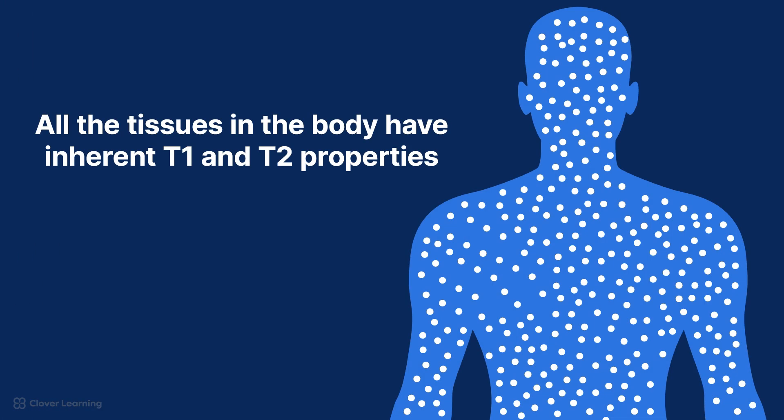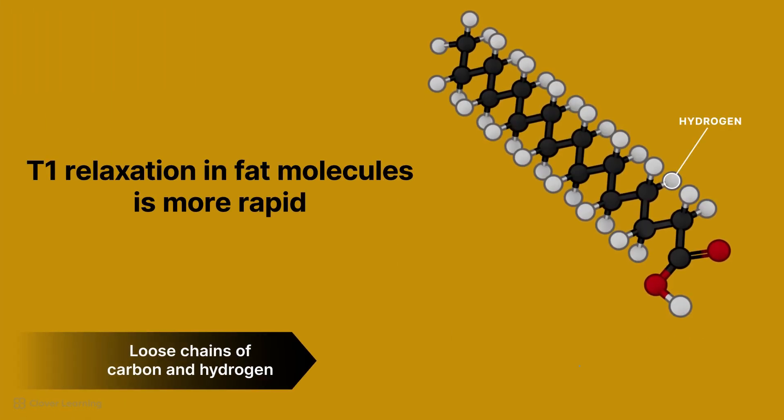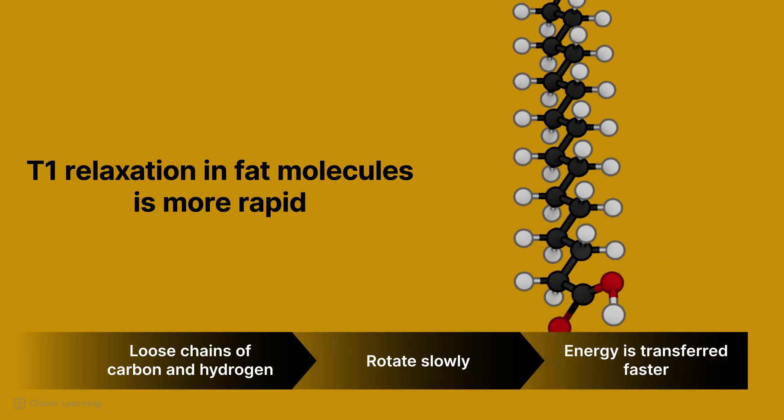These concepts are important to understand because all of the tissues in the body have inherent T1 and T2 properties based on the density of hydrogen nuclei and their molecular composition. Fat, for instance, has a high density of hydrogen nuclei and loose chains of carbon and hydrogen atoms giving it high energy transfer efficiency.